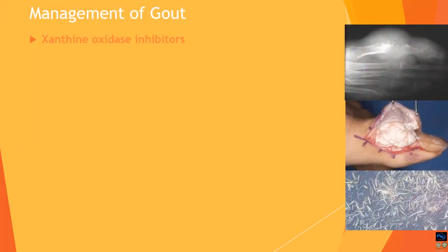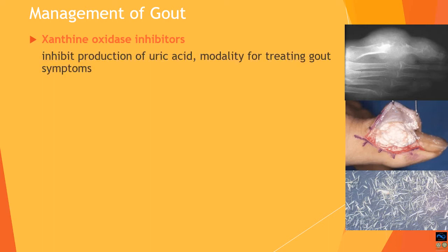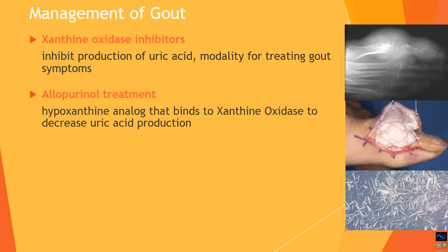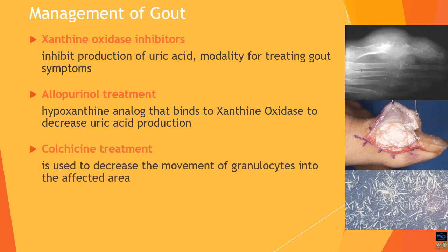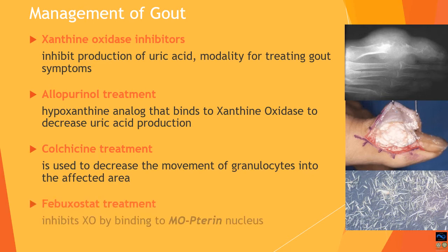Gout is managed by drugs that inhibit specific degradation pathways, especially xanthine oxidase inhibitors, which are used to inhibit the production of uric acid. Allopurinol is used to block xanthine oxidase and prevent the conversion to uric acid. Colchicine treatment is used to decrease the movement of granulocytes into the affected area, preventing the flare and the production of reactive oxygen species. Febuxostat is also now utilized, which inhibits xanthine oxidase more potently than allopurinol.